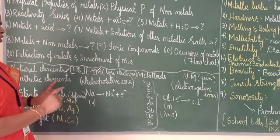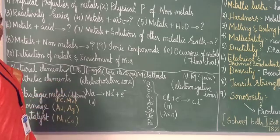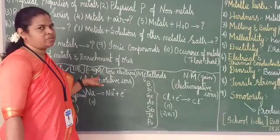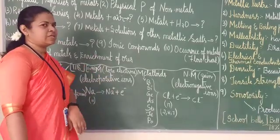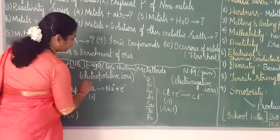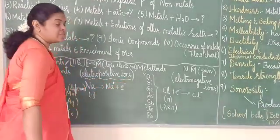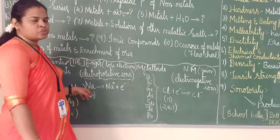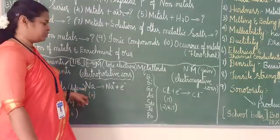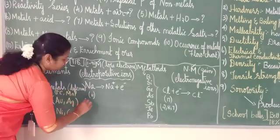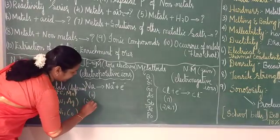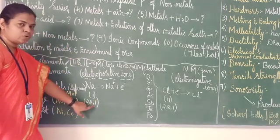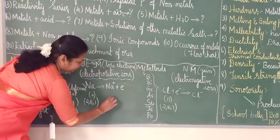There is an important difference between metals and non-metals. Metals always lose electrons, so they are called electropositive — they produce electropositive ions. For example, sodium's atomic number is 11. Its electron configuration is 2, 8, 1. To maintain stability in the outermost shell, it will lose that 1 electron.